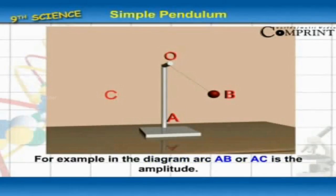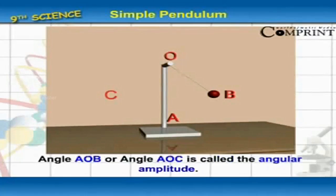For example, in the diagram, arc AB or AC is the amplitude. Angle AOB or AOC is called the angular amplitude.